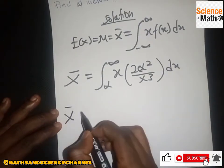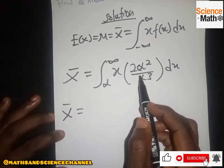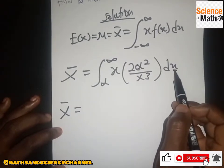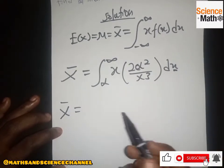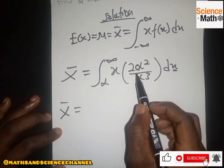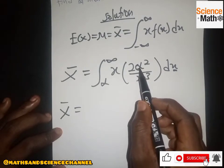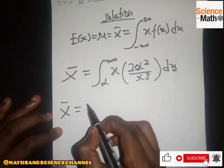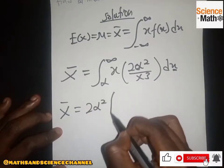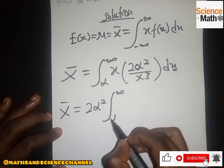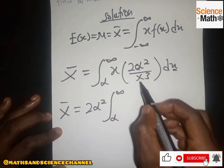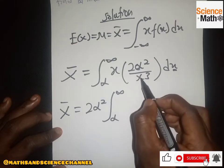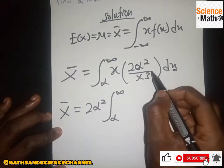Next, we substitute whatever does not relate to x outside the integral, since it is basically a constant. Looking at the expression, 2α² is a constant, so we bring it outside: 2α² times the integral from α to infinity, and we are left with x divided by x³.